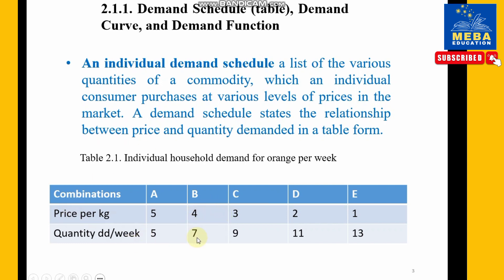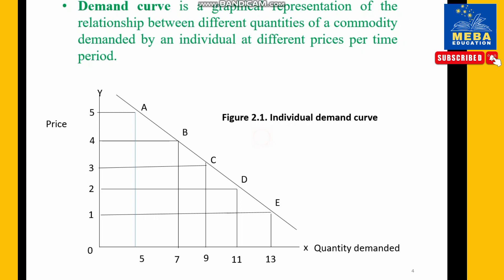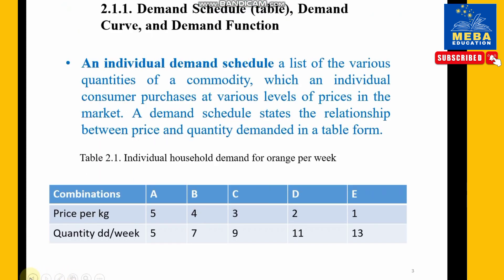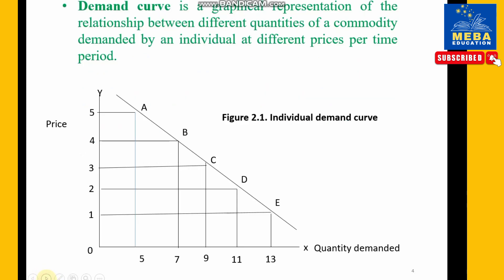The demand schedule is a graph — a representation of the relationship between different quantities of a commodity demanded by an individual at different price levels per period of time. The x-axis represents quantity demanded, and the y-axis represents the price level.